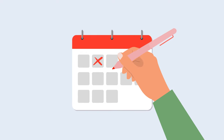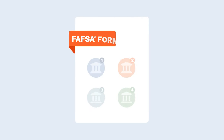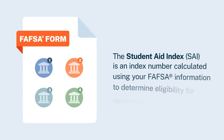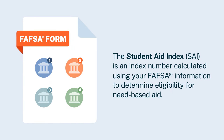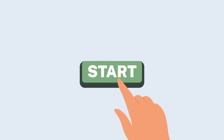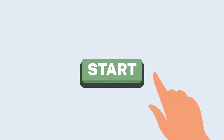On the online FAFSA form, you can list up to 20 schools, and those schools will use the information you provide on the form and your Student Aid Index to calculate how much and what types of student aid they will offer you.